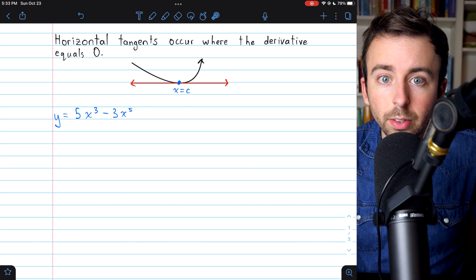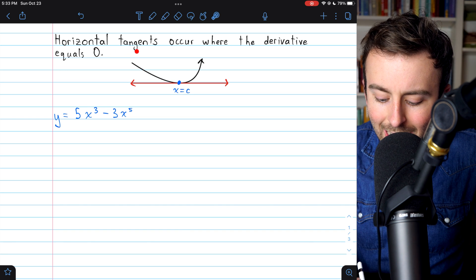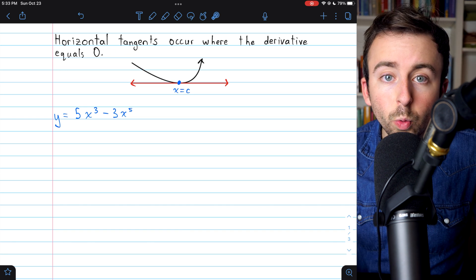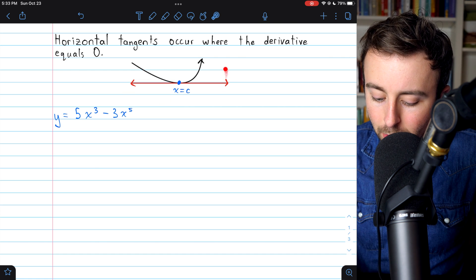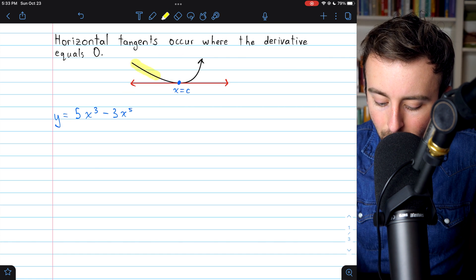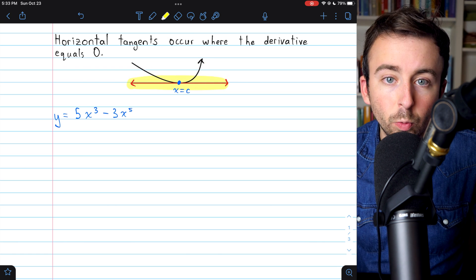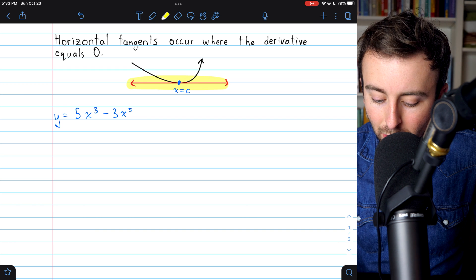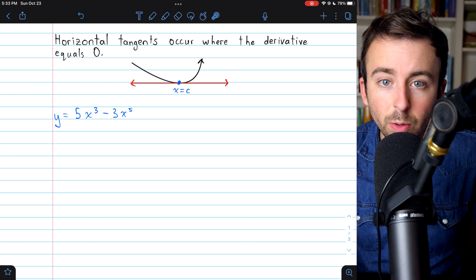The key to finding horizontal tangents is remembering this simple fact, that horizontal tangents occur where the derivative of a curve equals 0. Here's an example in a picture. We've got some curve here, and here is our horizontal tangent in red. It's tangent to the curve, horizontally, at this point where x equals c.